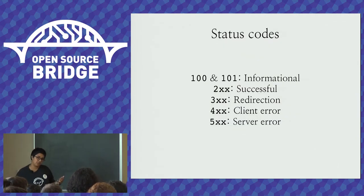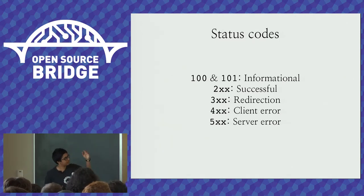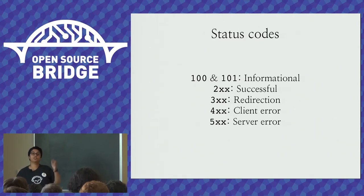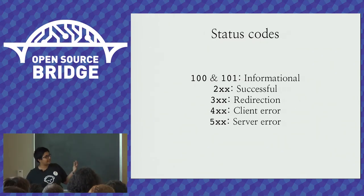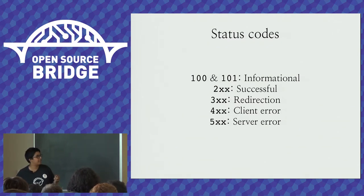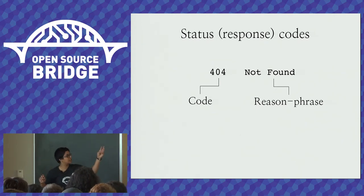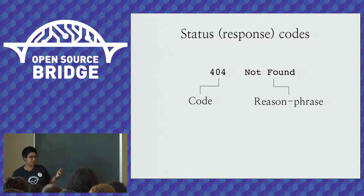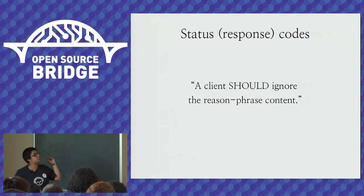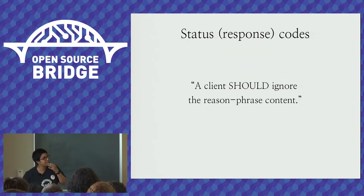Let's talk about response status codes — there are five classes. The 100s are informational. The 200 series says the request was successful in some way — 200 OK being one you've probably seen. The 300s are redirection: different URL for what you want. 400 is client error — you screwed up. 500 is server error — I screwed up. Technically it isn't just 200 OK or 404 Not Found — there are two parts: the three-digit integer code and a reason phrase. A client should ignore the reason phrase and only care about the integer.